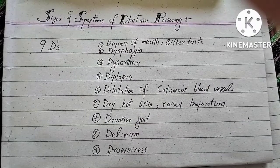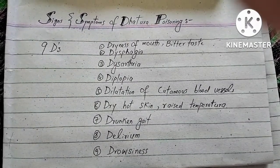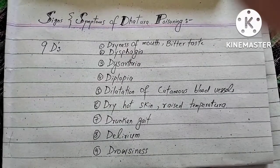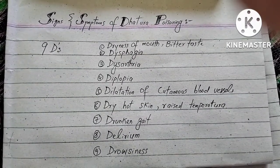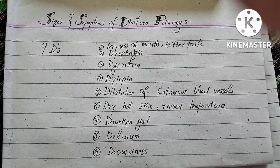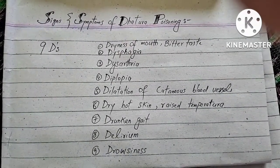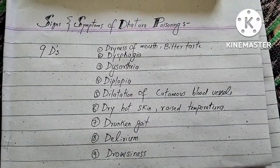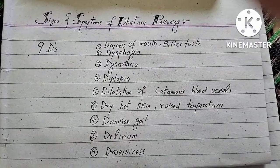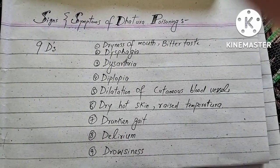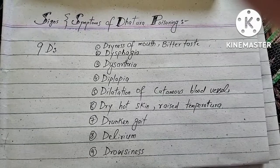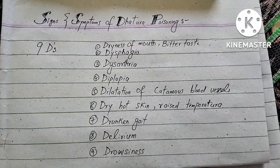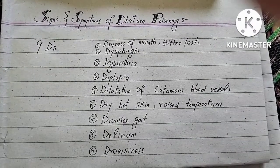There will be delirium, which means acute confusional state. There will be drowsiness. So these nine D's will help you to easily memorize the signs and symptoms of Datura poisoning, because most of the signs and symptoms of various poisons are the same and are confused almost every time. These mnemonics will help you to memorize them with crystal clear concepts and long-lasting memory.